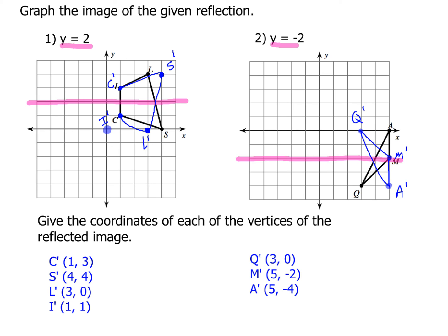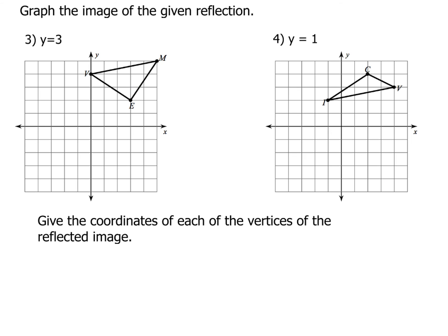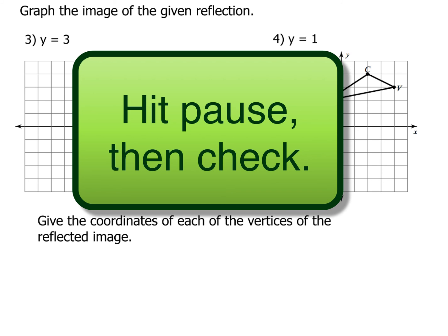So that's it for these two. Now I want to give you two more to practice on your own, just to make sure that you have it down. And that's going to be with these two images here. So with these two images, go ahead and write down the reflection, graph that, and then give the coordinates for each of the vertices of the reflected image. When you're done, come on back and check and see how you did. Go ahead and hit pause now.